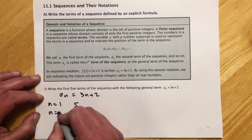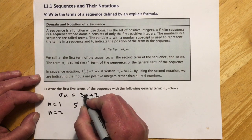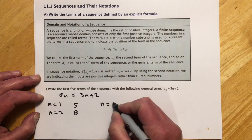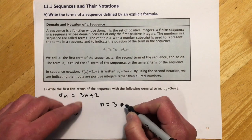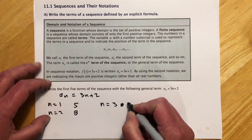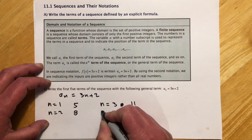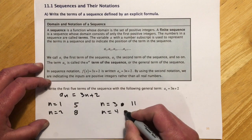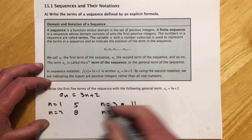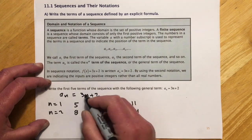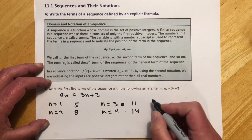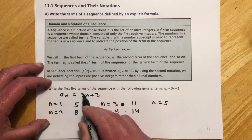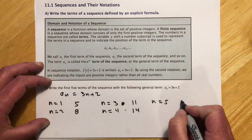So if n is 1, then 3 times 1 plus 2, so the first term would be 5, like I was saying. If n is 2, 3 times 2 would be 6 plus 2 makes 8. If n equals 3, then that would be 3 times 3 would be 9, plus 2 would be 11. n is 4, 4 times 3 is 12, plus 2 is 14. You can see they're just counting up by 3s, starting with an offset of 2 there. And then if n is 5, 5 times 3 would be 15, plus 2 is 17.